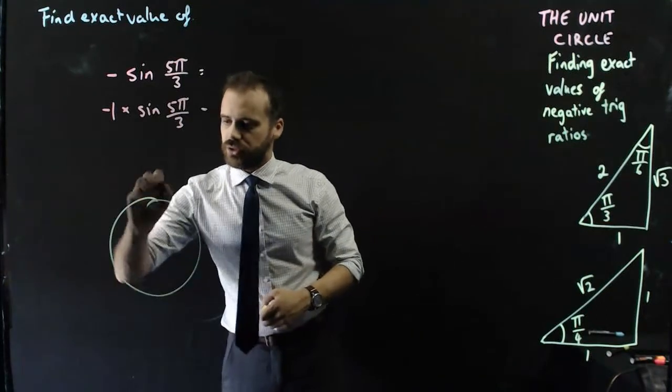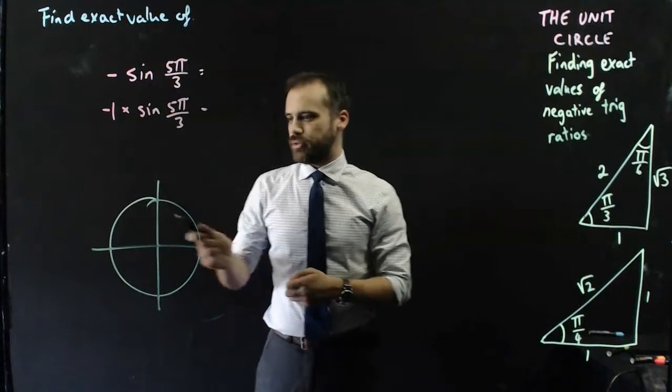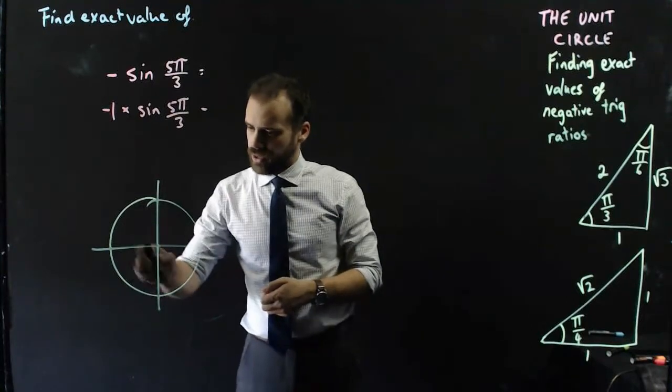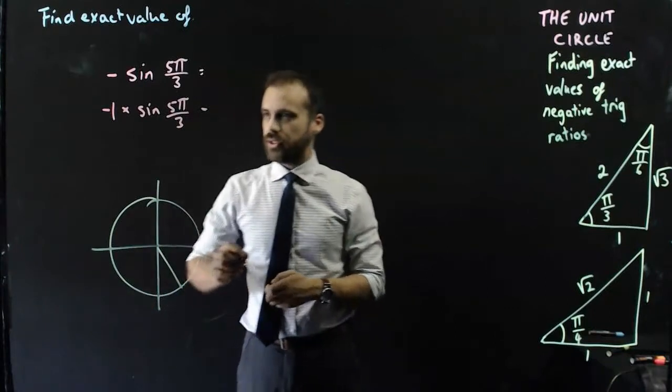So, a unit circle is a good idea. 5π/3, that's π/3, 2π/3, 3π/3, 4π/3, 5π/3, that's over there like that.